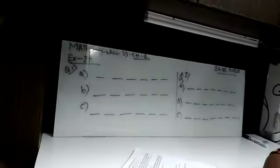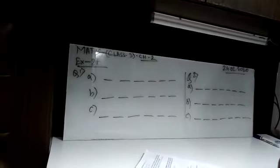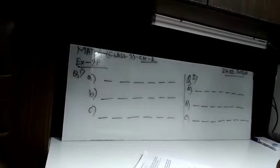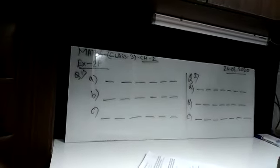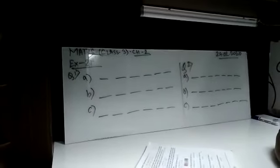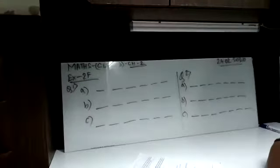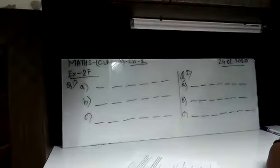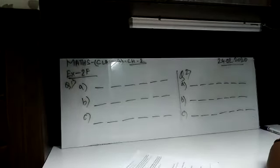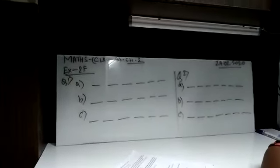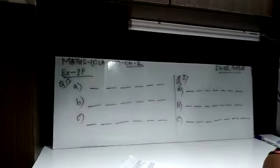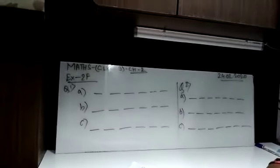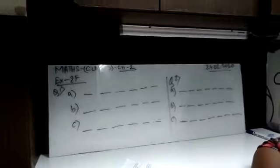So in this exercise we will make either small number or large number using certain number of digits given in the question. Whenever any number of digits given and if we have to make the small number, then simply we have to arrange the digits in ascending order. And if we want to make a large number using the digit, then we have to arrange the digits in descending order. So let's see how the sums are going on.